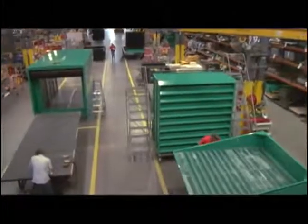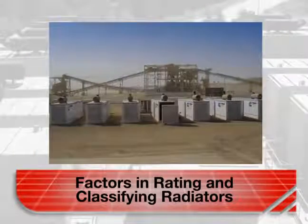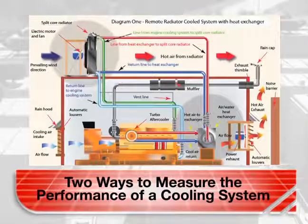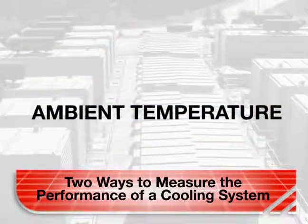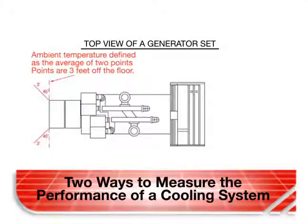Now we dive into the details of rating and classifying radiators. These are the factors involved: where they are installed, the temperatures they are rated to handle, and how those ratings are determined. There are two ways to measure the performance of a cooling system: ambient temperature, and what's called the air on core or AOC. When a cooling system is rated for ambient temperatures, what is measured is the temperature of air on the inlet side of the system before it picks up heat from the alternator and the engine components. This temperature is typically measured as an average of two points, as shown in the diagram.